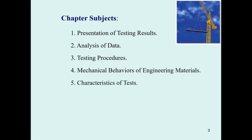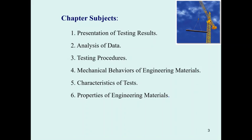We also talk about the mechanics of each test. For example, concrete is good at resisting compression but not good at taking tension. So the characteristic of concrete testing is mostly compression. However, in some cases we need to find the tensile strength of concrete, and we do the split density test. The last chapter discusses the general properties of engineering materials, including the advantages of each material.